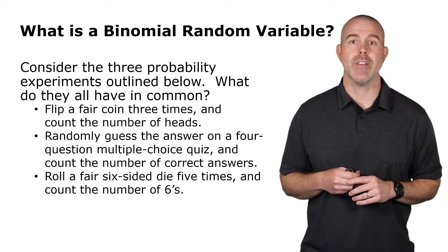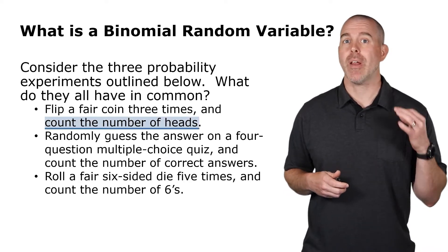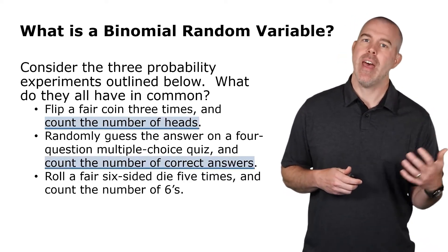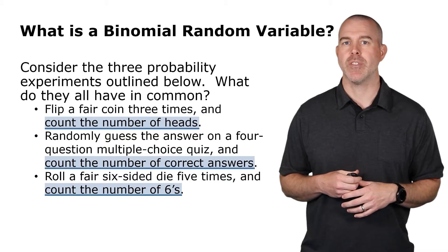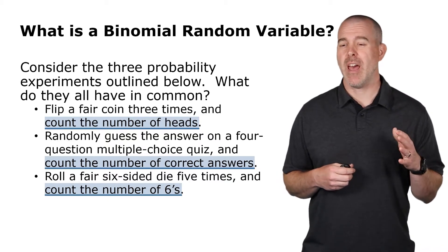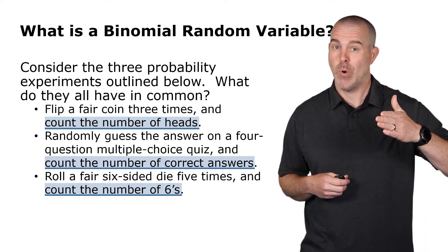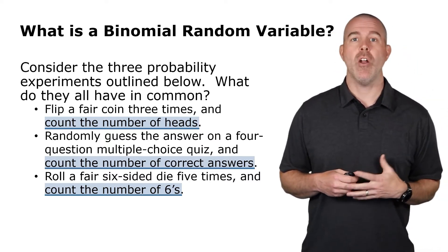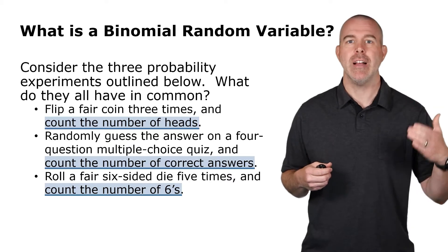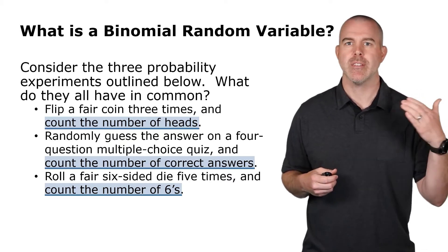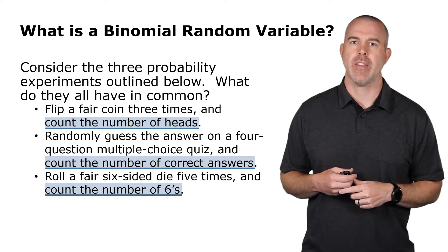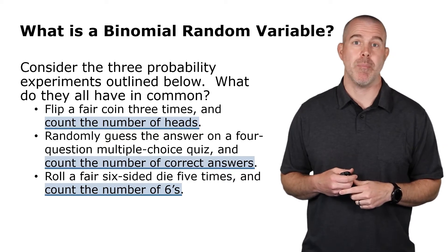Now there's a few things they all have in common. First, you can see they're all about counting: the number of heads, the number of correct answers, and the number of sixes. There are also some other characteristics they have in common—we're just counting one thing, so it's either that thing or it's not. And also some of the probabilities are constant here. The probability of a six is constant and what happens on one roll doesn't affect the next, so each of the rolls is independent.